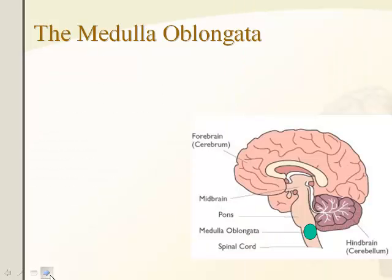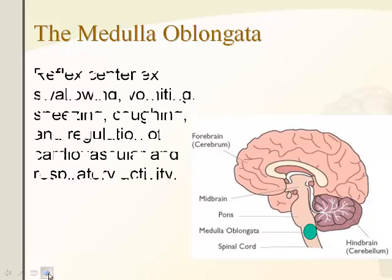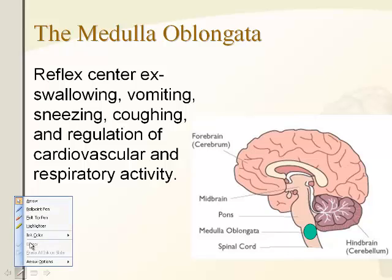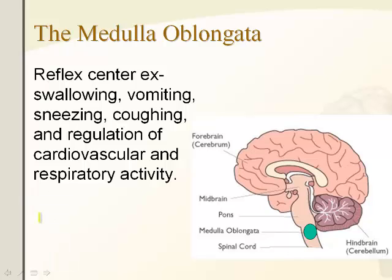The medulla oblongata — you've seen this in the respiratory and circulatory system units. It also controls reflexes in general: swallowing, vomiting, sneezing, and coughing. For our purposes, we're mainly focused on its cardiovascular and respiratory functions.